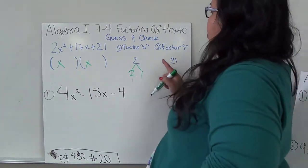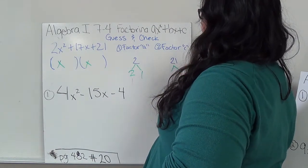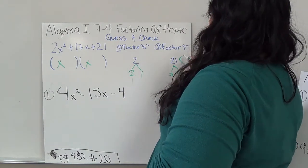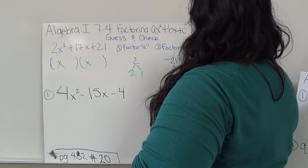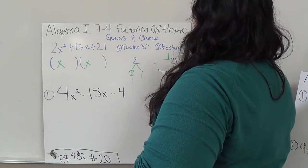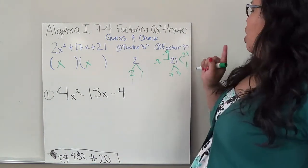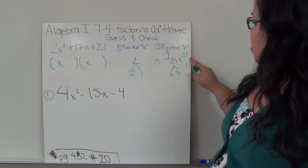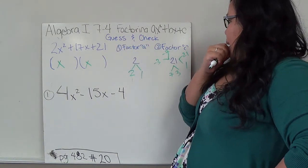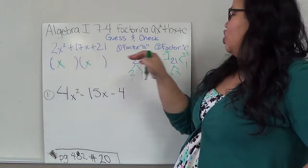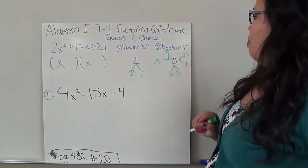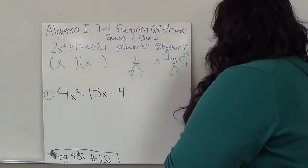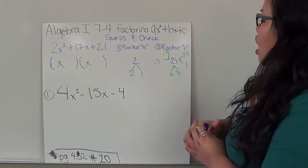Now let's look at the factors of C. C is 21, so we have 7 and 3, or 21 and 1, or negative 3 and negative 7. I'm thinking it's not going to be the bigger numbers, so I'll start with the smaller ones. I won't start with the negatives either because all the terms in this expression are positive — if the middle number were negative, I'd deal with negative factors. I've factored both A and C, and now I'll look at my possibilities.